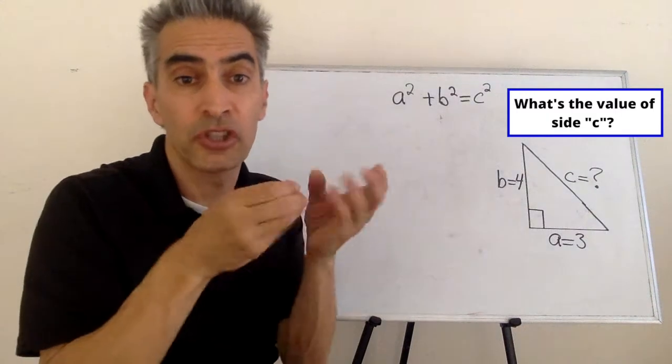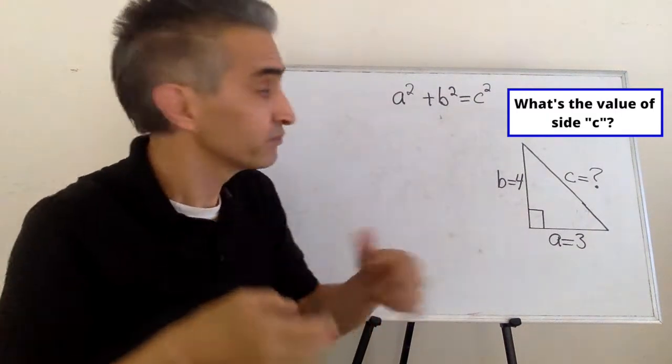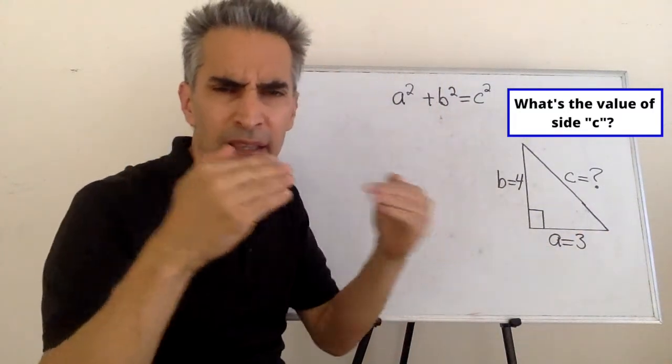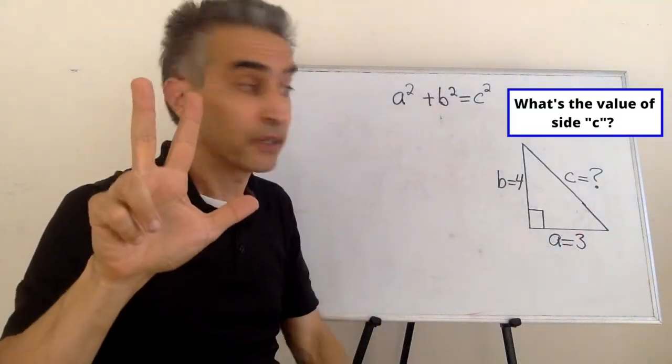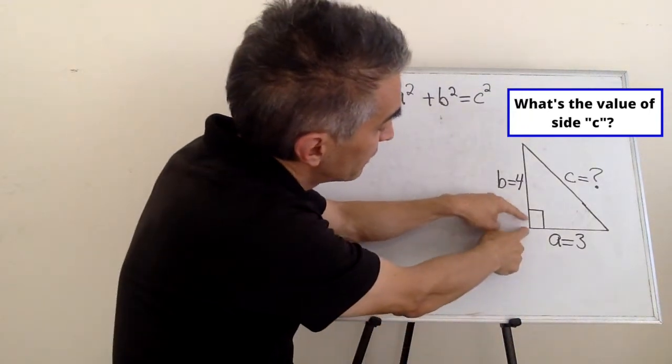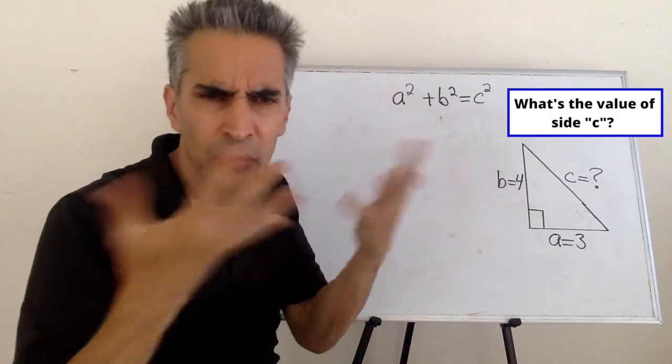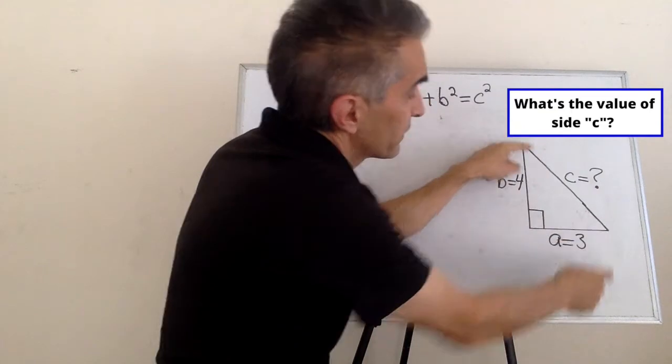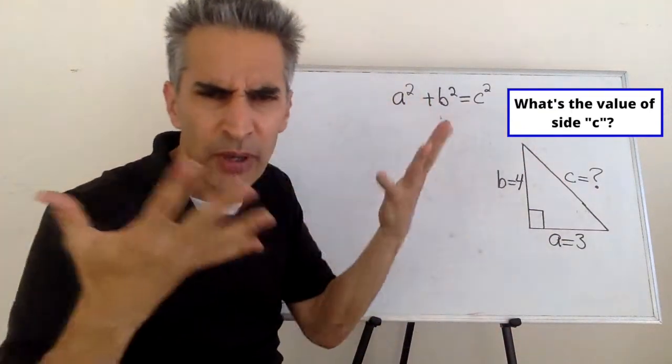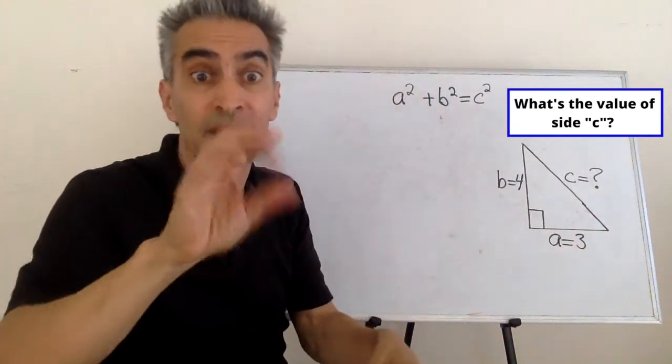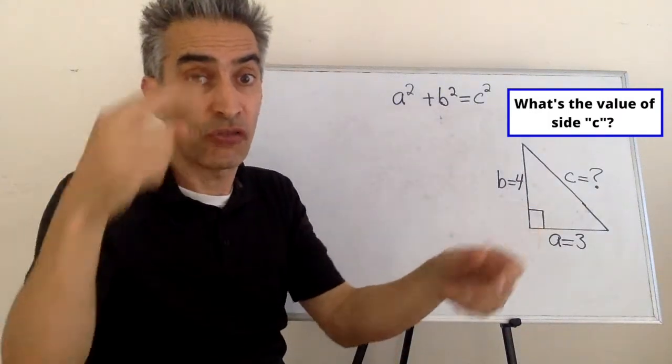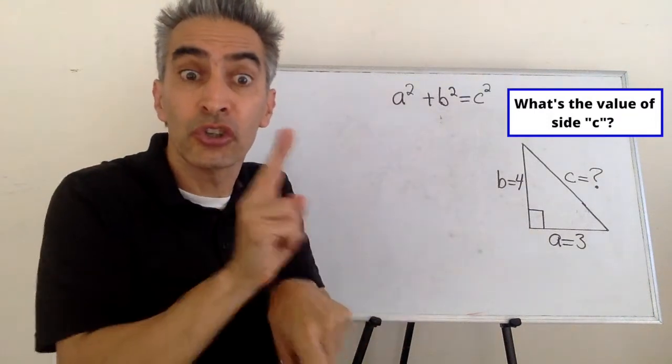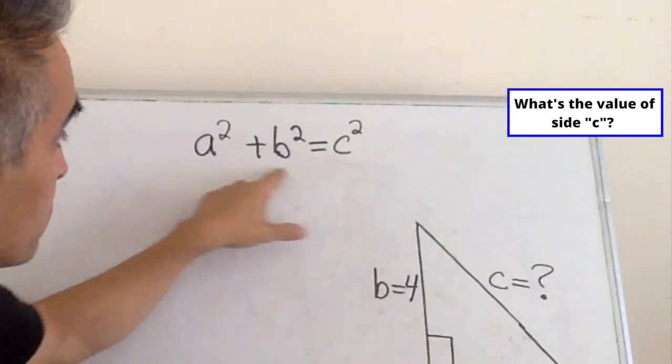Now I'm going to show you an example problem for us to solve. This line A equals 3. This line B equals 4. And this line C, well we don't know what that is. We're going to have to find that out. We're going to solve for C.